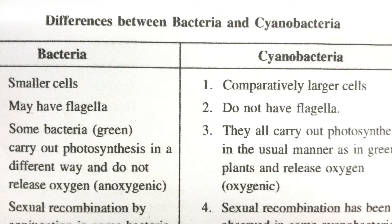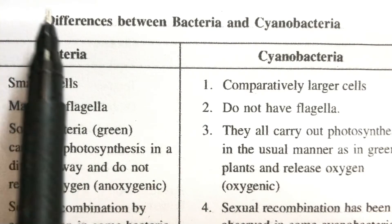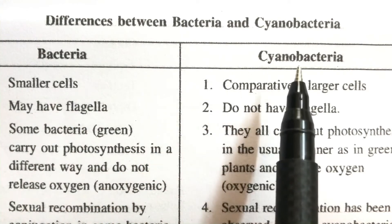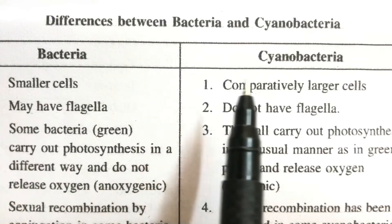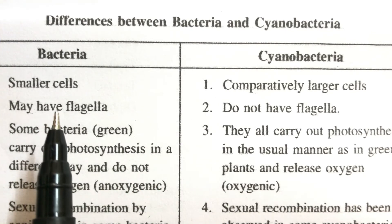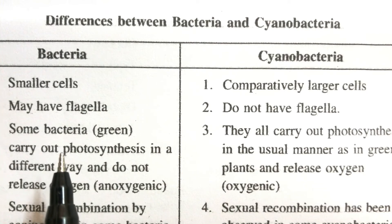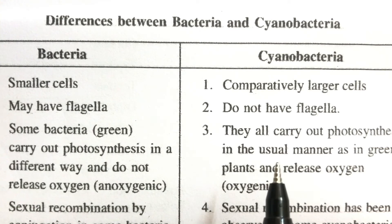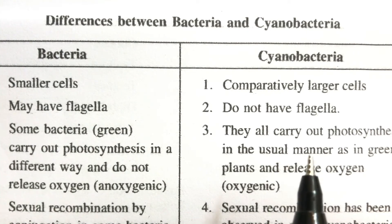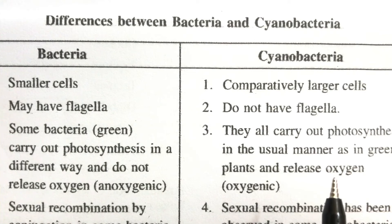There are some differences between bacteria and cyanobacteria. Bacteria are comparatively smaller in size than cyanobacteria. Bacteria generally have flagella, which are missing in cyanobacteria. Generally bacteria do not perform photosynthesis, but if they are green they can, though they never release oxygen — so they are termed anoxygenic. In contrast, cyanobacteria are blue-green algae that contain chlorophyll, perform photosynthesis, and release oxygen, making them oxygenic. Sexual recombination by conjugation is seen in both bacteria and cyanobacteria.